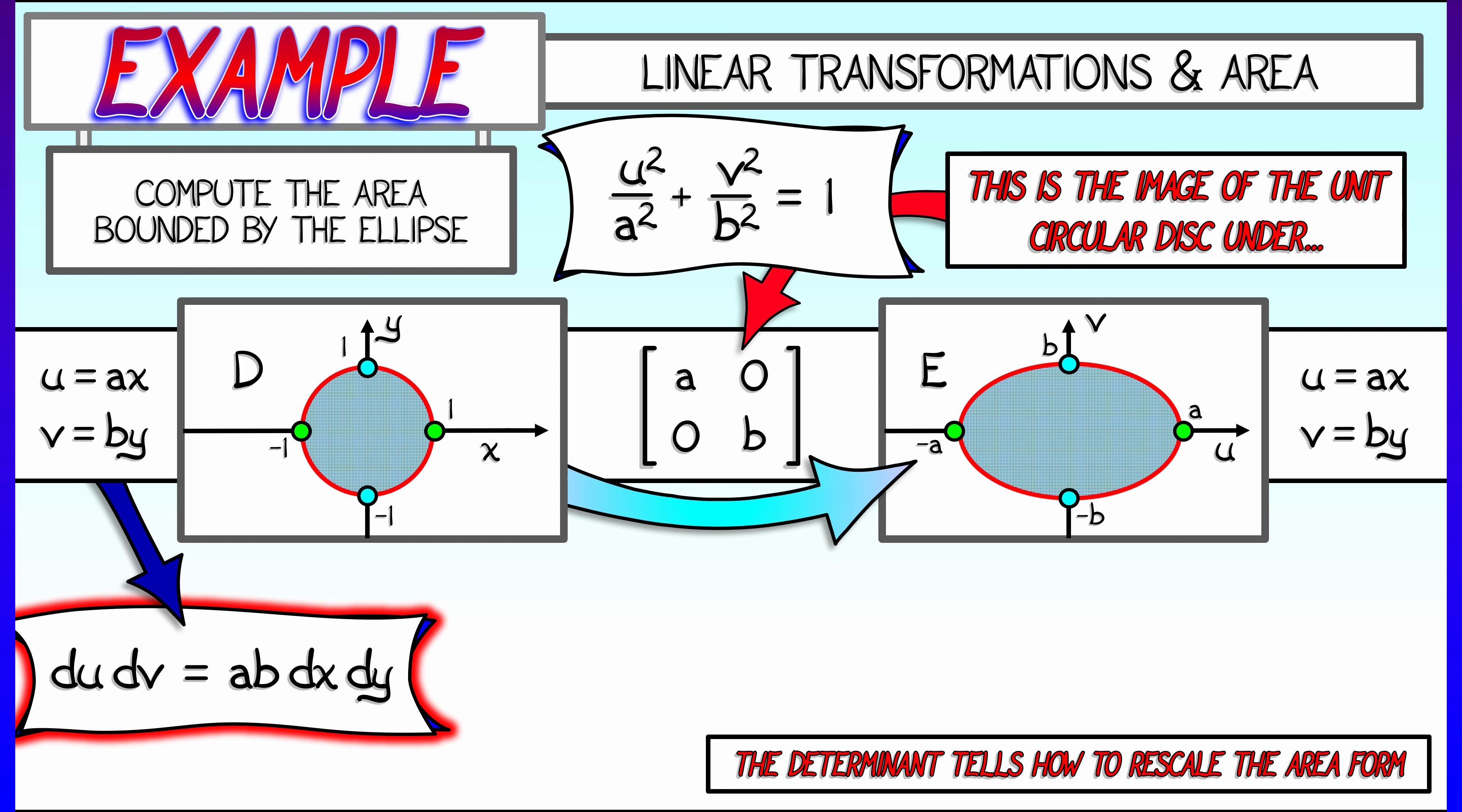So if we label the elliptical region E and label the circular disk D, then the area of E, that is the double integral over E of the area form du dv,